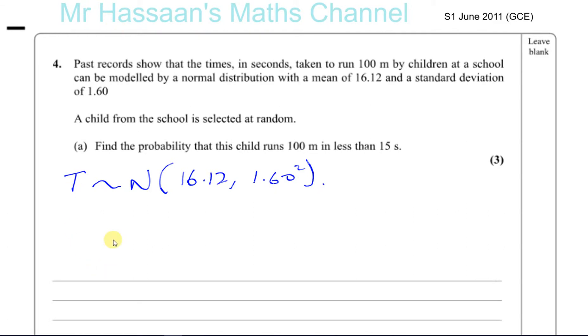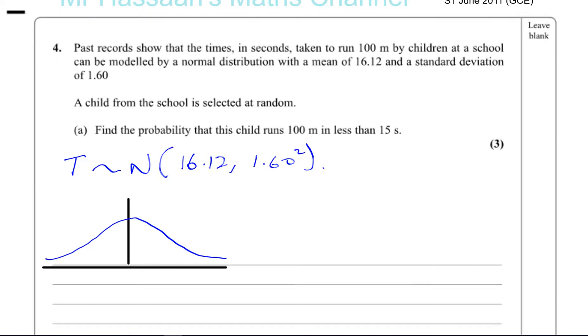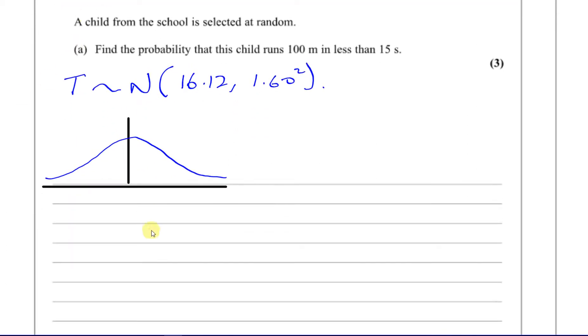So we are going to have a normal distribution, a bell curve. The mean is 16.12, that's the mean over here.